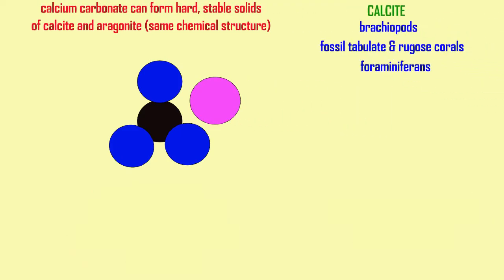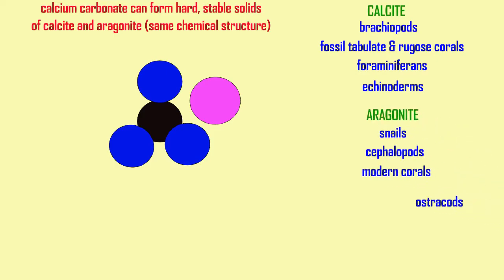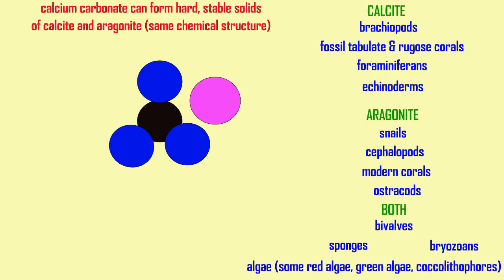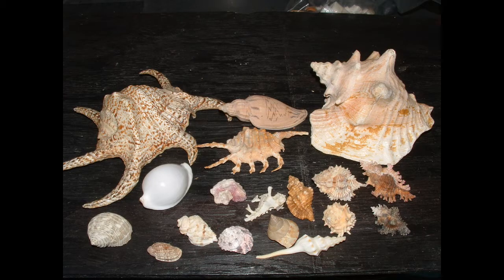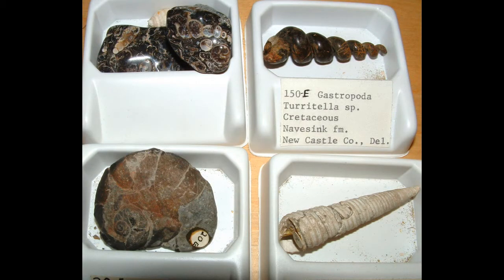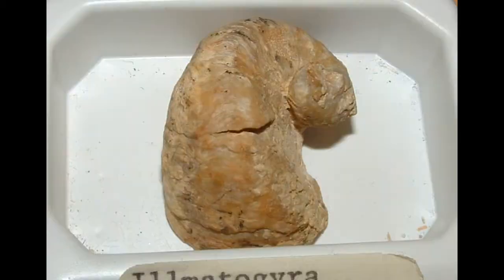Calcium carbonate comes in two forms and has the same chemical structure, but one form is known as aragonite, and that can be made by a number of animals, including some mollusks, such as snails. So not only do modern snails produce their shells out of aragonite, but so too did fossil snails.